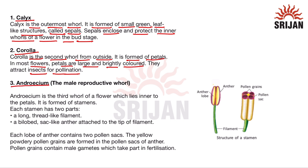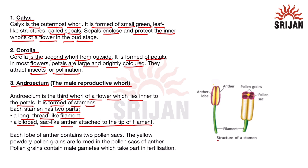The third part is the androecium, or the male reproductive whorl. It lies inner to the petals and is formed of stamens. A stamen has two parts: first, a long thread-like filament, and second, a bilobed sac-like anther attached to the tip of the filament. Each lobe of the anther contains two pollen sacs, so in total four pollen sacs are present in an anther.